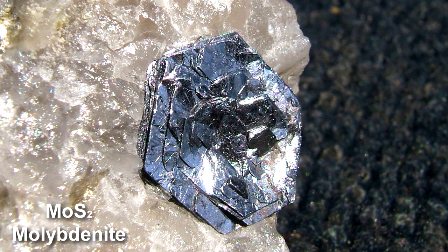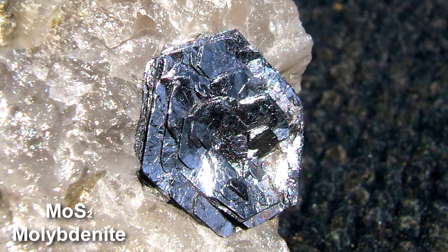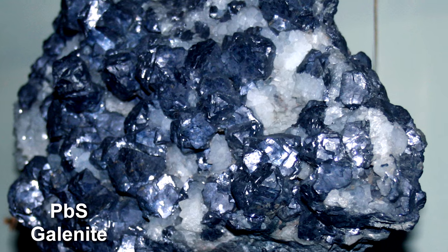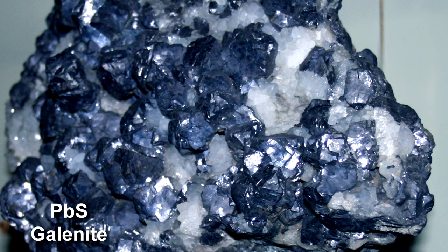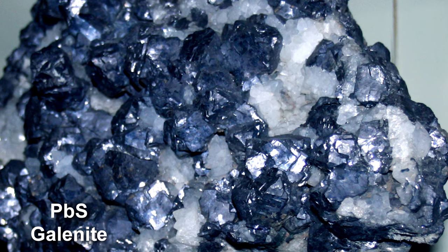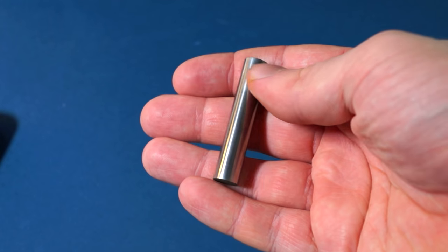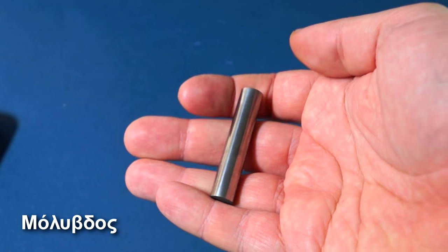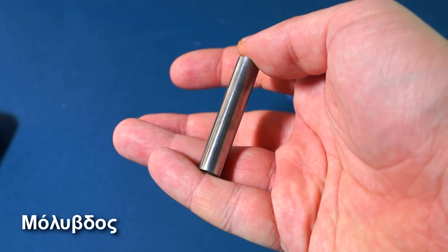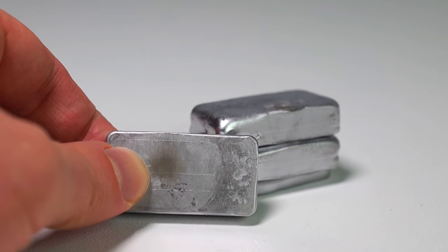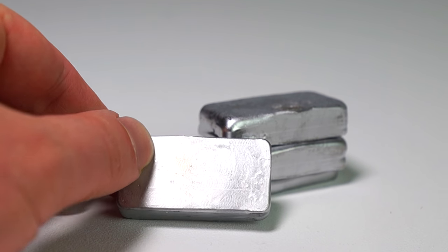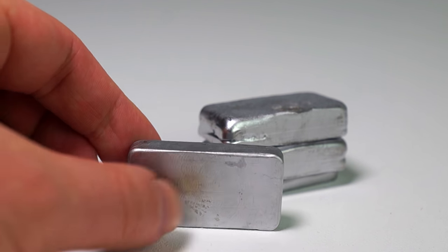Molybdenum does not occur naturally as free metal, but it can be obtained through chemical synthesis from minerals. This metal's name is derived from the Greek word molybdos, meaning lead, since its ores were frequently confused with lead ores.